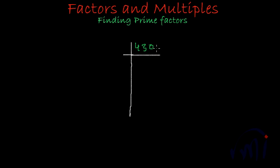Since 430 has 0 in the units place, it will be divisible by 2. So I'll write 2 over here. 2 times 2 is 4, 2 times 1 is 2, 2 times 5 is 10 — so we get 215.